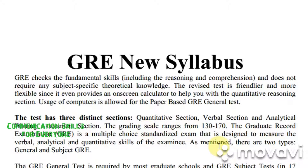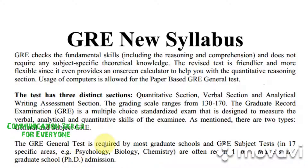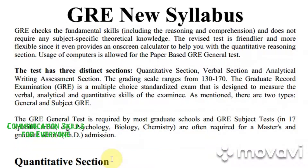There are two types of GRE: general and subject. The GRE general test is required by most graduate schools, while GRE subject tests in 17 specific areas — for instance psychology, biology, and chemistry — are often required for masters and graduate school admission.